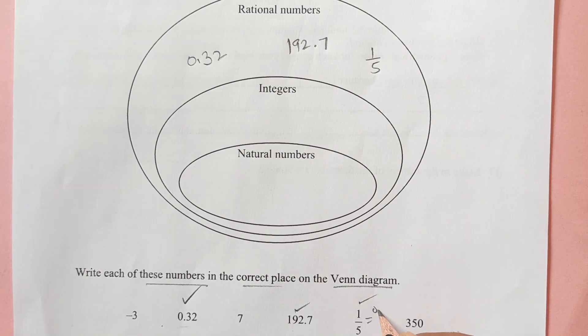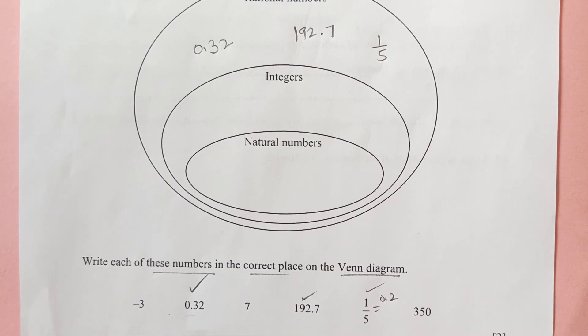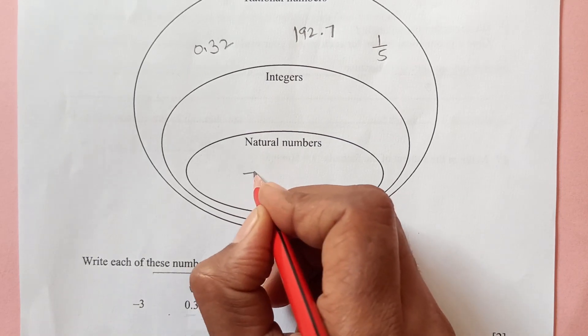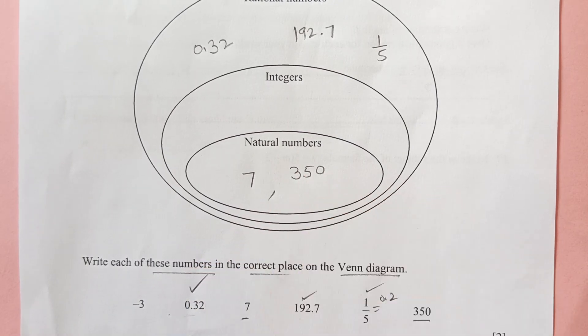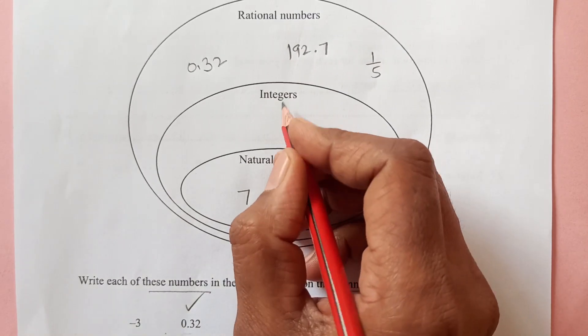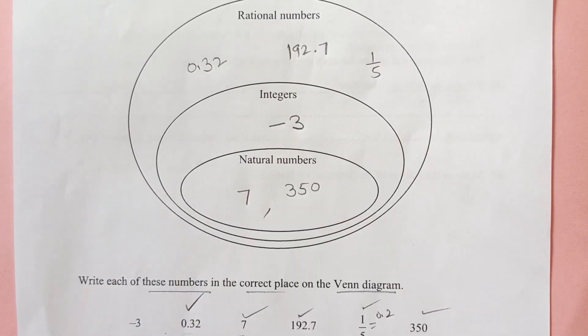So 0.32, then we have 192.7 and also 1 over 5. Because when you divide it, this will be 0.2. So now the whole numbers, natural numbers we have here is 7 and 350. So 7 and 350 and now we are left with the negative 3. Negative 3 is an integer.